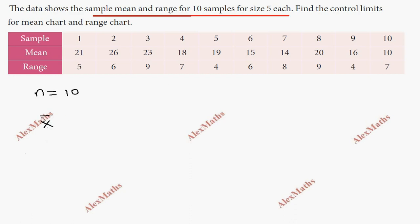They use the formula X double bar, which is sigma X bar divided by n. Add up all the mean values: 21, 26, 23, 18, and so on. This equals 182 divided by 10, which gives you the value 18.2.